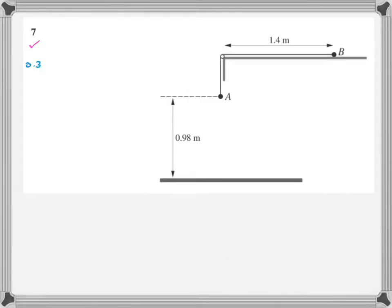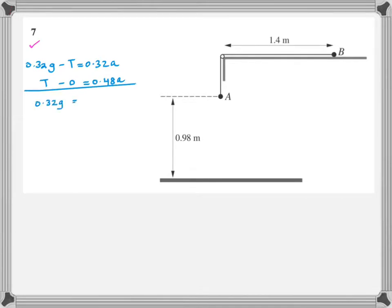For the equations of motion: mg − T = ma for the hanging particle A. For particle B on the smooth table: T − 0 = ma (no friction component since it's smooth — the weight acts vertically and tension horizontally, no connection between them along the plane). Add both equations to find the acceleration of the system, which comes out to be 4 m/s².